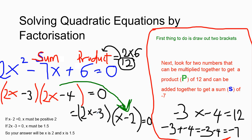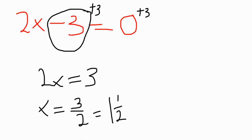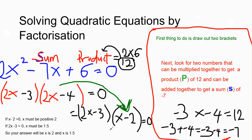For 2x minus 3: if 2x minus 3 is 0, we need to get rid of this negative 3 first by adding 3 to both sides. It becomes 2x equals 3. Remember, 3 minus 3 is 0, so that's gone. Now, if 2x equals 3, divide both sides by 2 to eliminate the 2. Your x will then become 1 and a half, or 1.5. So, your answer will be x is 2 and x is 1.5.